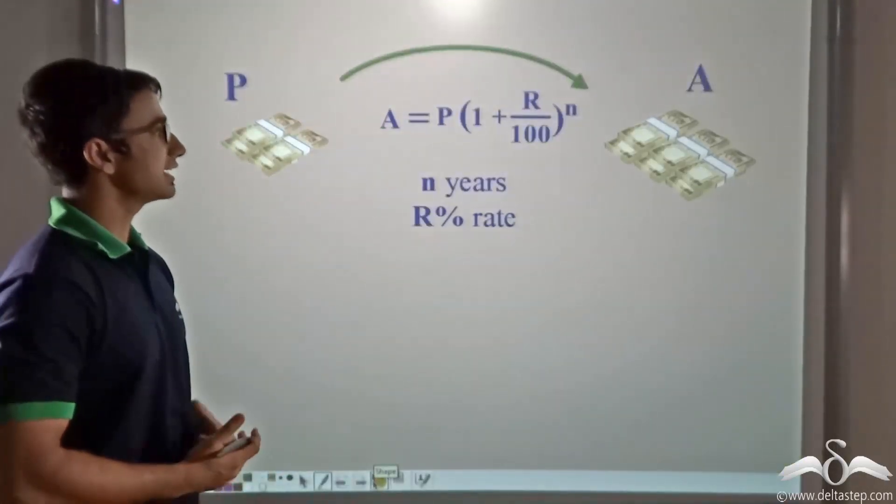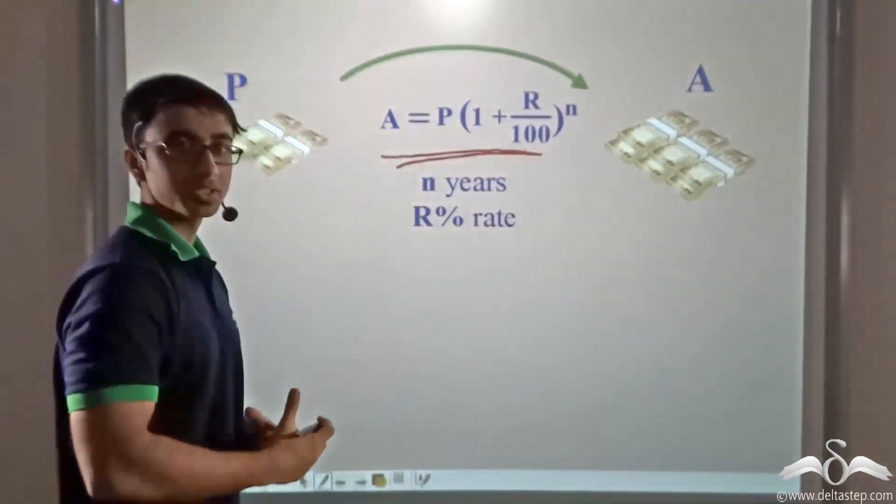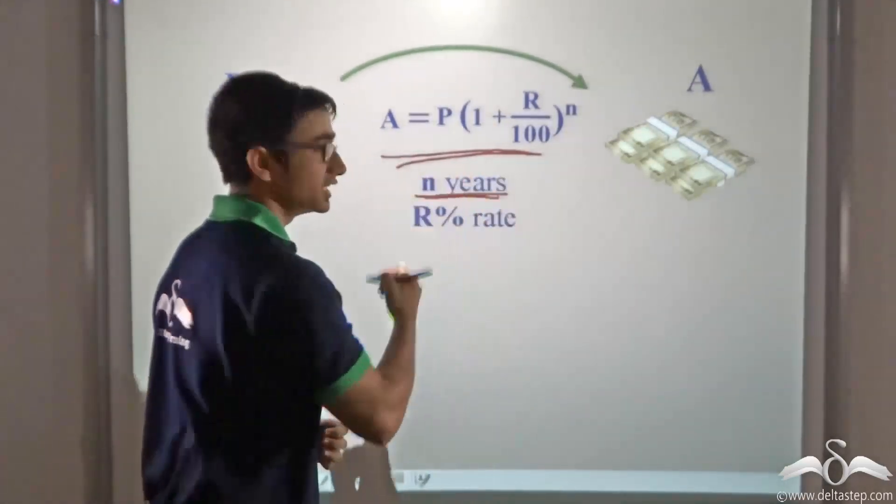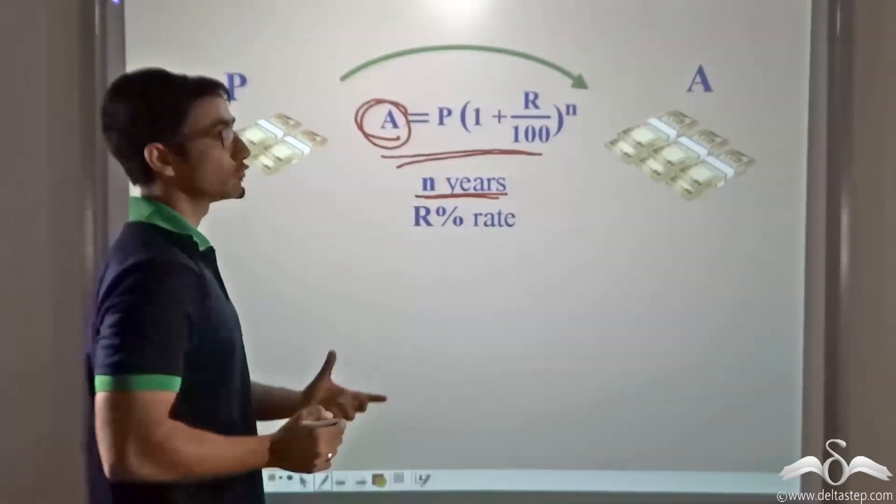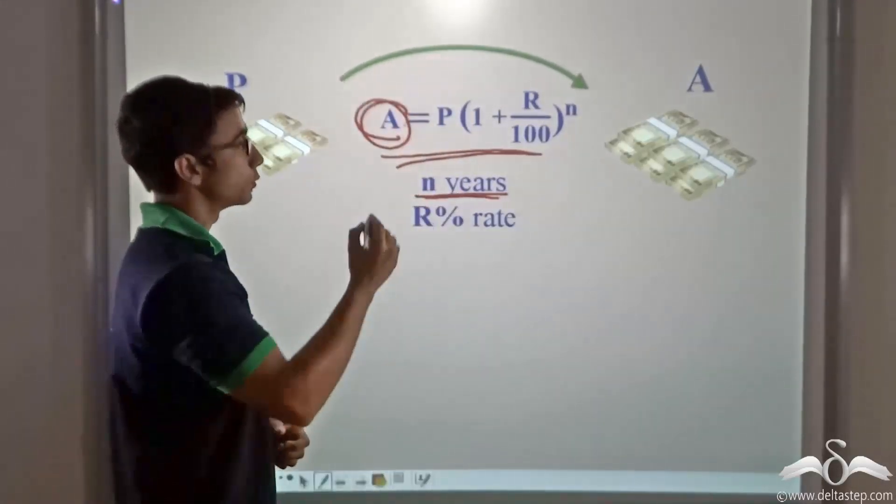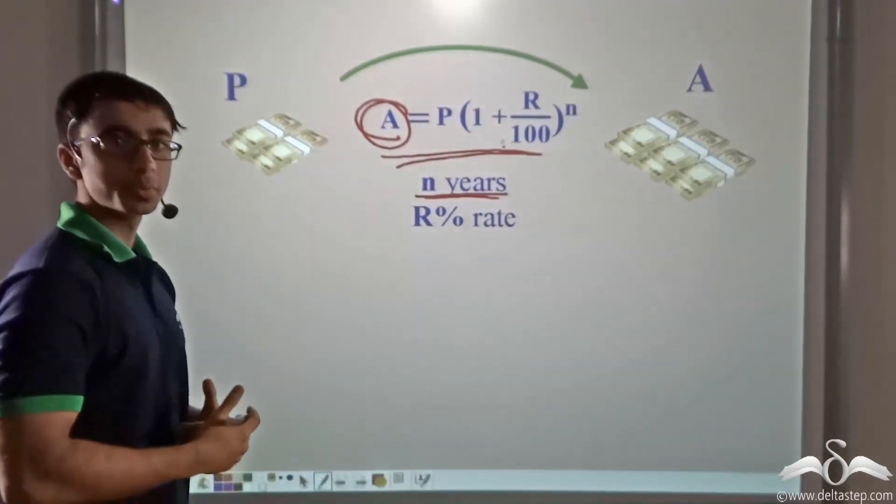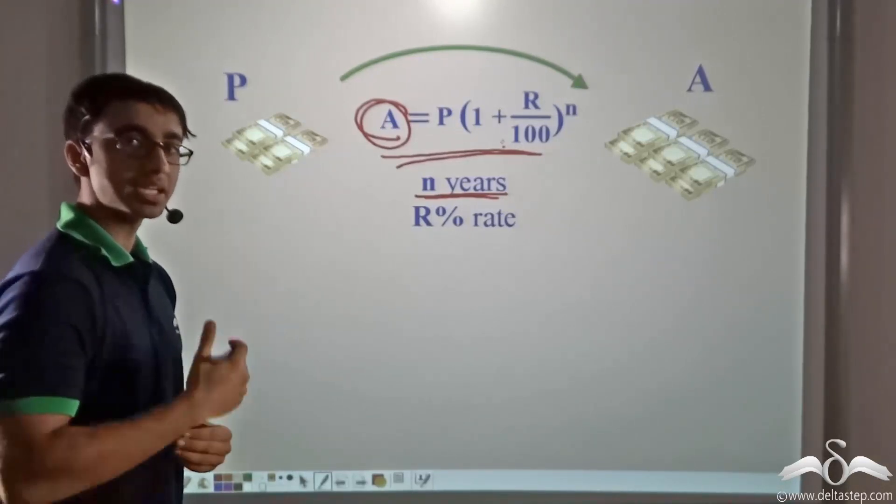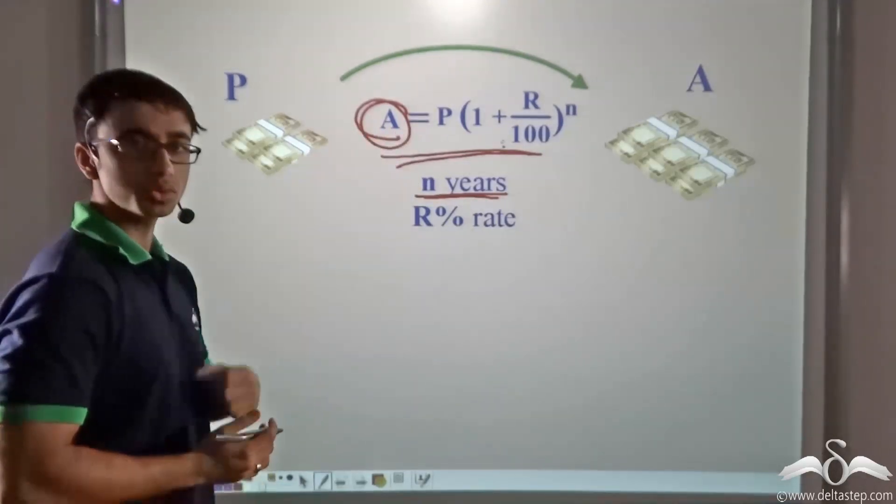So we can say that when money is growing, we apply this formula in order to find out the final value which we get after N years. This is the amount for compound interest when this money is being compounded annually. Now what formula do we apply if we have to find out what the value of land will be after the given number of years? That formula will be similar to this formula.